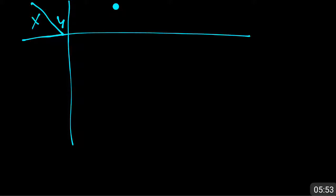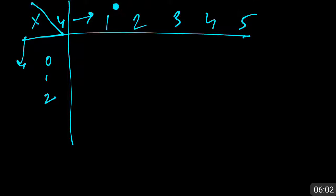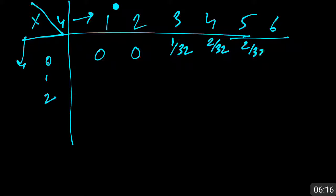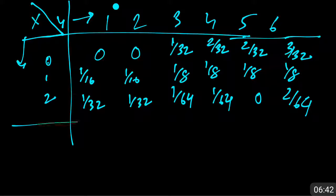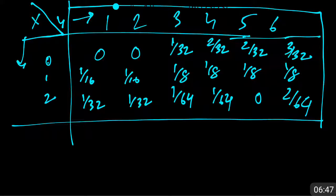Here Y values are written as columns and X values as rows. X takes values 0, 1, 2 and Y takes values 1 through 6. The probabilities are: P(0,1)=0, P(0,2)=0, P(0,3)=1/32, P(0,4)=2/32, P(0,5)=2/32, P(0,6)=3/32. For x=1: 1/16, 1/16, 1/8, 1/8, 1/8, 1/8. For x=2: 1/32, 1/32, 1/64, 1/64, 0, 2/64.